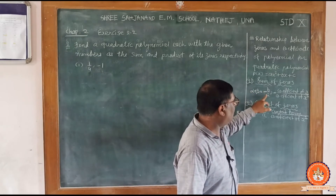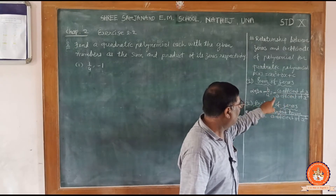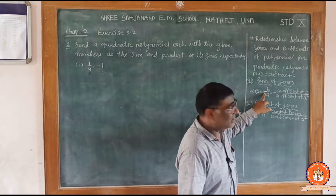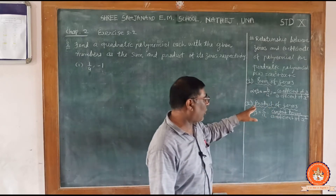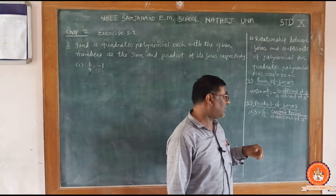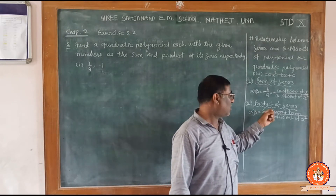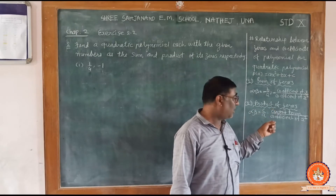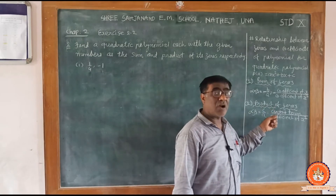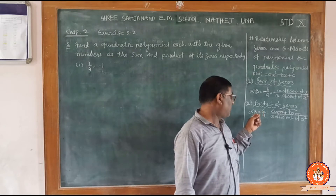Sum of zeros is equal to minus b upon a, where b is the coefficient of x and a is the coefficient of x square, with a negative sign. The product of zeros is equal to c upon a, where c is the constant term and a is the coefficient of x square. So if you divide the constant term by the coefficient of x square, you directly find the product of the two zeros.